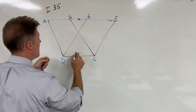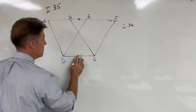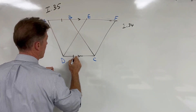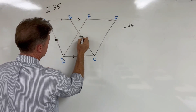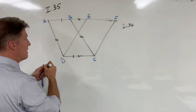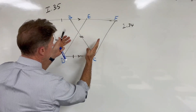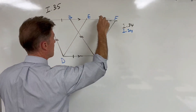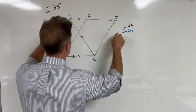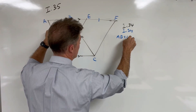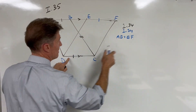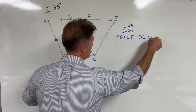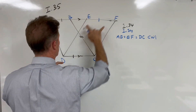We begin this proof by using Prop 34, which says that for parallelograms, opposite sides are equal to each other. So side AB equals side DC, and side AD equals side BC. For the same reason, looking at the other parallelogram, side DC equals its opposite EF. Therefore AB equals EF, because they're both equal to DC — and two things equal to the same thing are equal to each other, which is Common Notion 1.